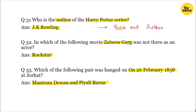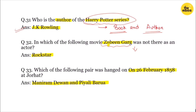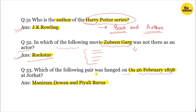The next question is: who is the author of the Harry Potter series? The author of the Harry Potter series is J.K. Rowling. The next question asks which of the following pair was hanged on 26th February 1858.